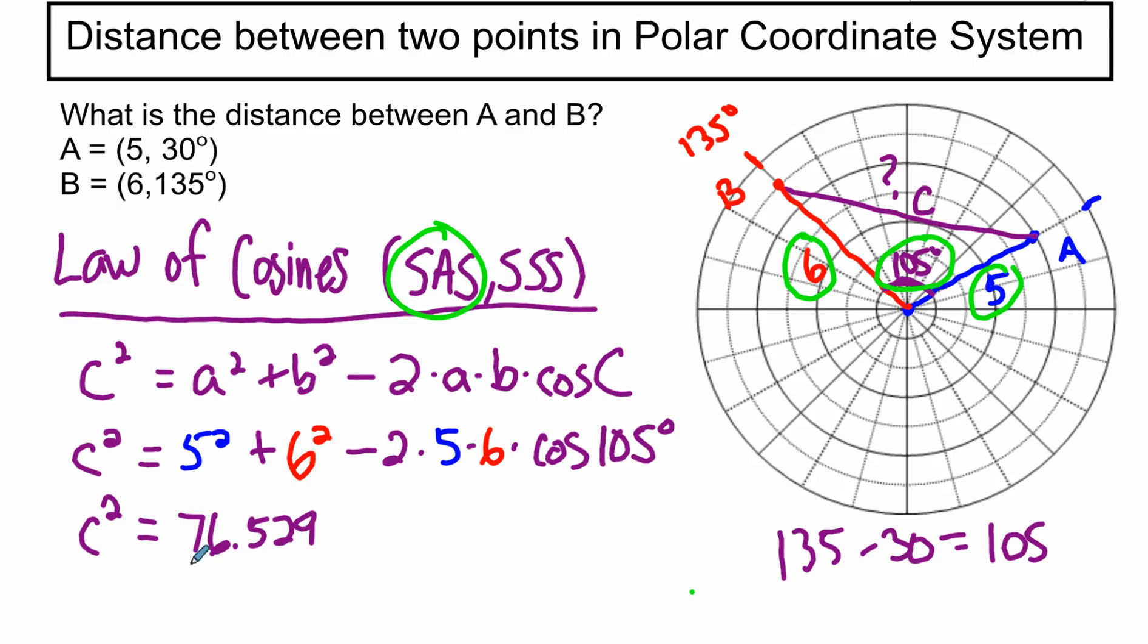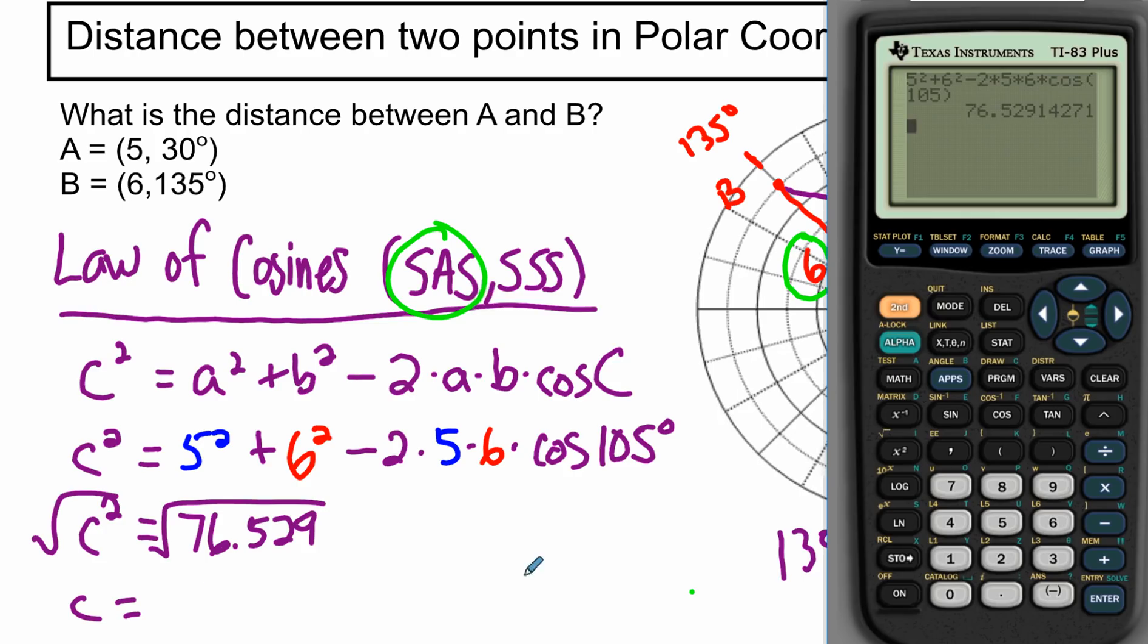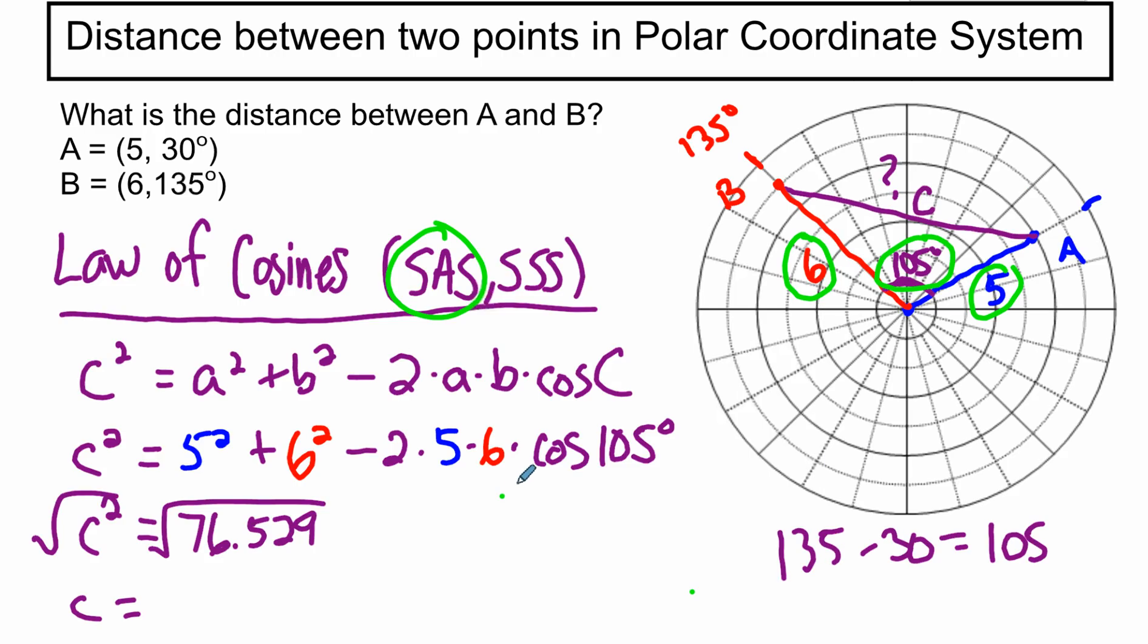And that's not the distance. That's the distance squared. So we're going to square root both sides. And what do we get? So back to my calculator, I'm going to do the square root of that number, and I get 8.75. So the distance from A to B is about 8.75 units.